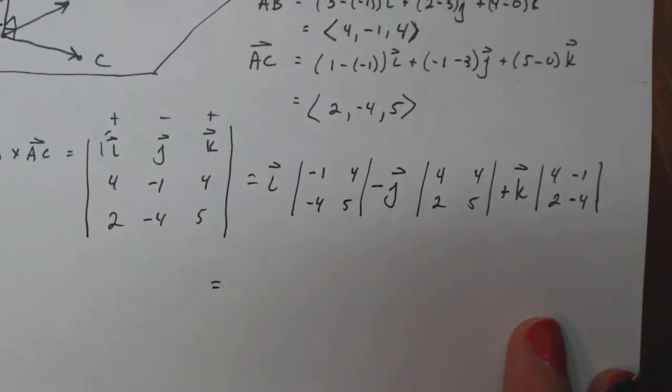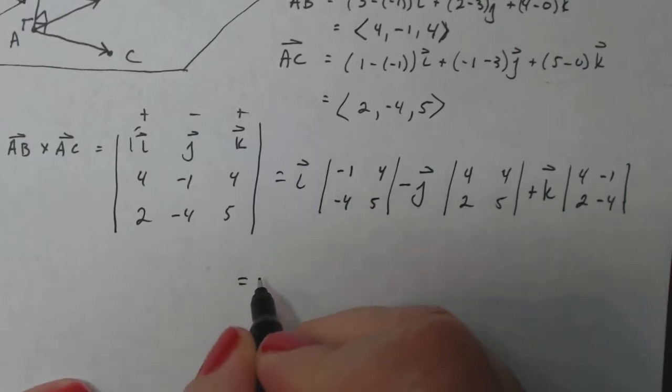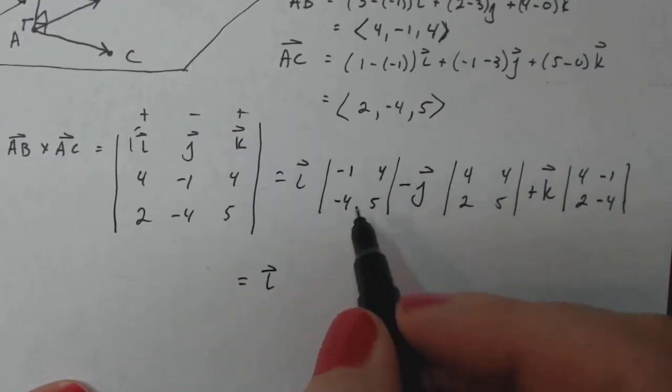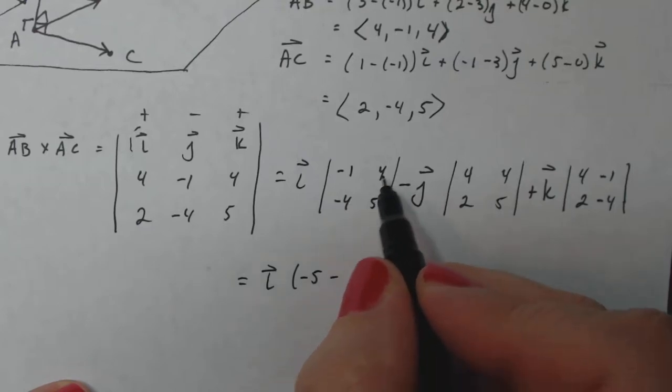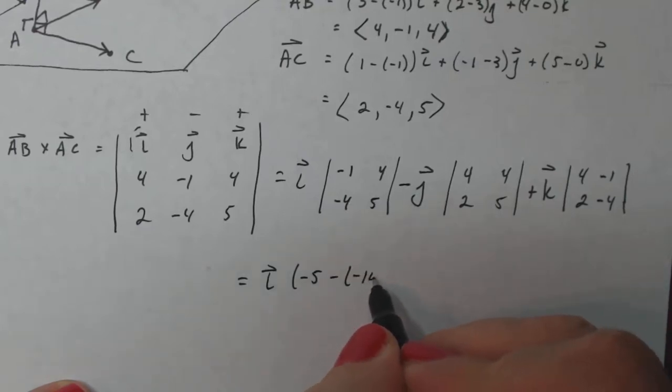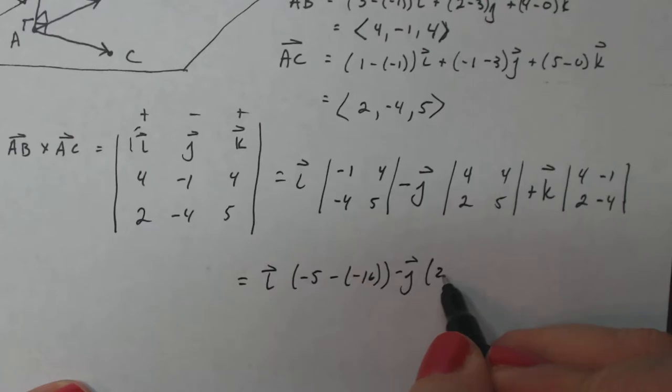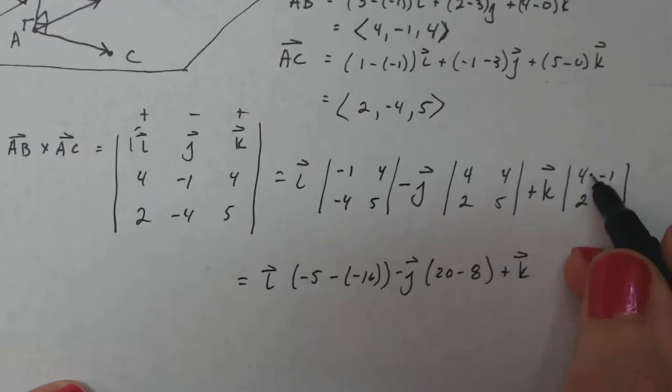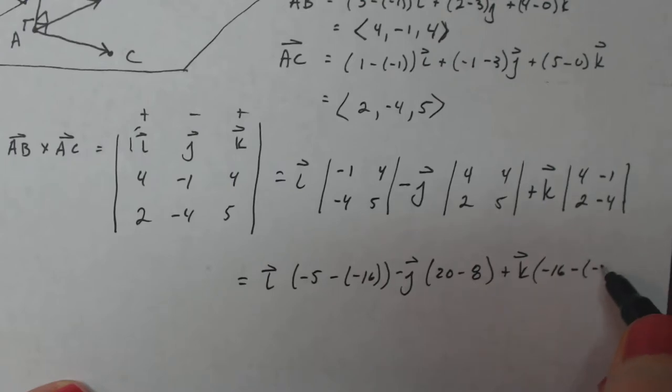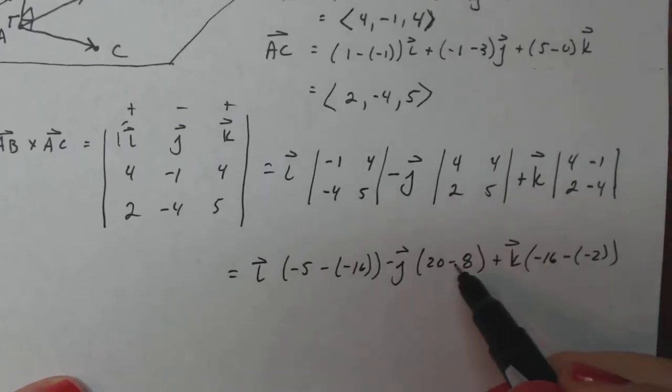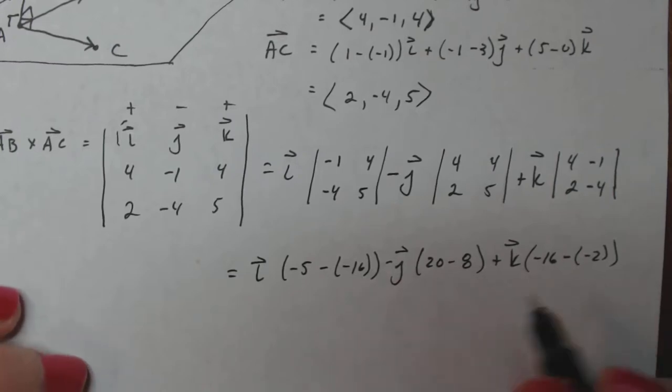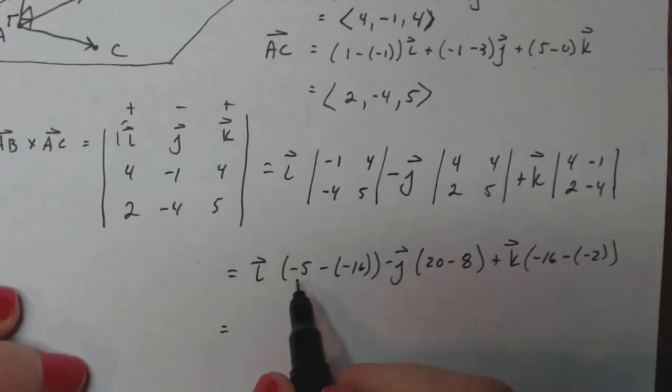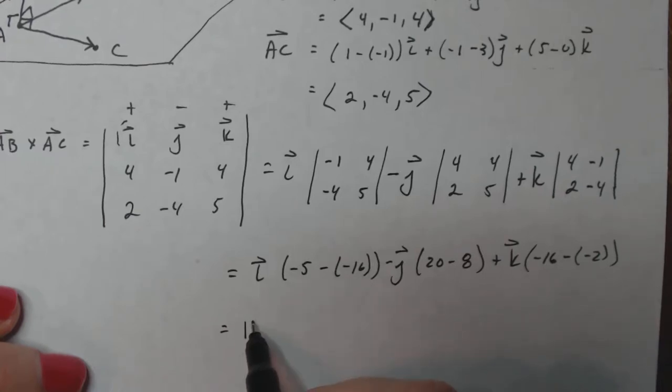So if I come back up here, I have to do i times negative 1 times 5 minus negative 4 times 4. What is that? Negative 16. So I have minus 5 plus 16. So that should give me 11i.